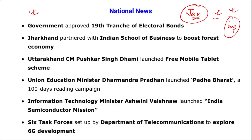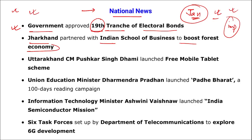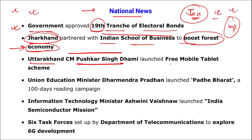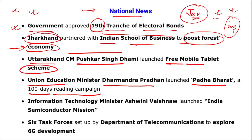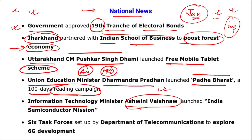Let's start with national news. The government approved the 19th tranche of electoral bonds — remember the number 19. Jharkhand partnered with the Indian School of Business to boost the forest economy. Uttarakhand Chief Minister Pushkar Singh Dhami launched a free mobile tablet scheme. Union Education Minister Dharmendra Pradhan launched 'Padhe Bharat,' a 100-day reading campaign — it was launched by the Education Ministry.